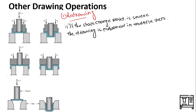When the part design indicates a drawing ratio too large to form a part in a single step, you perform the redrawing operation. There are some general guidelines for performing the redrawing operation.